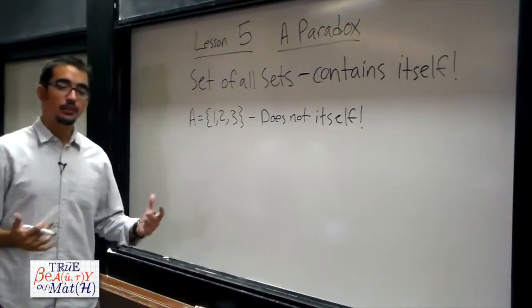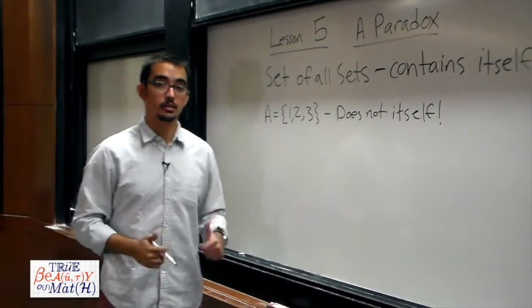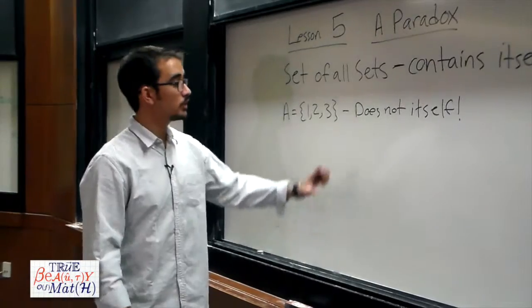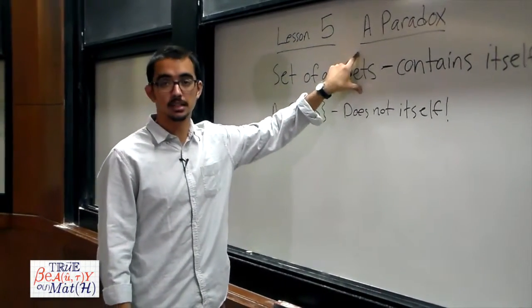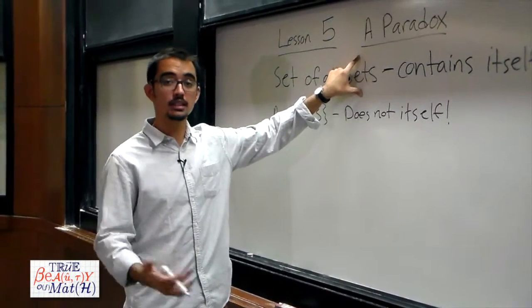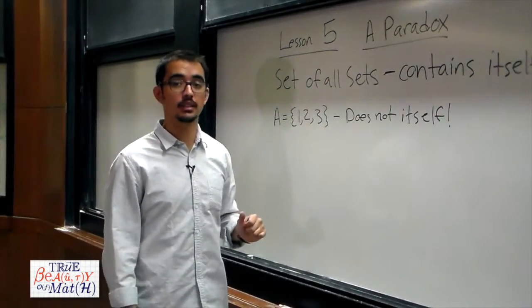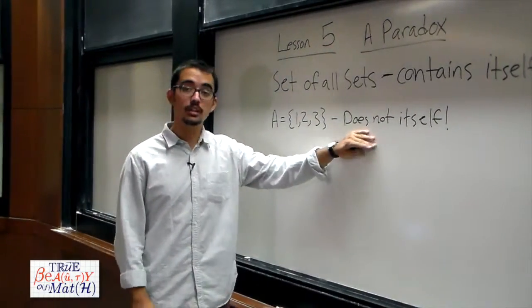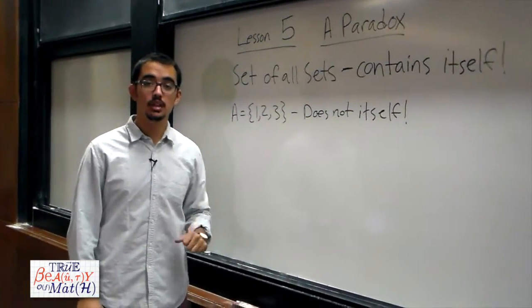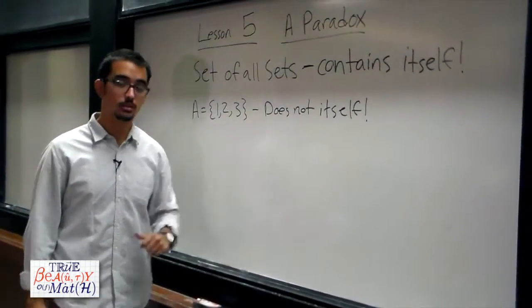So now we're faced with the obvious next question. Once we realize that some sets contain themselves — namely we've found at least one set that contains itself as an element — and some sets do not contain themselves, we can consider the following two sets.